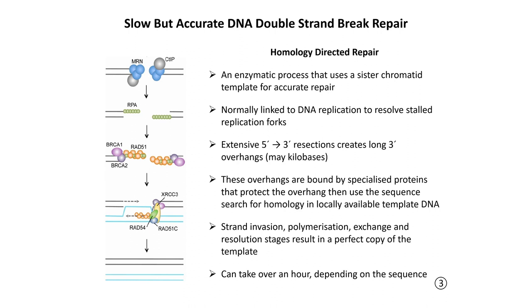This process overall can take over an hour depending on the sequence, so it's quite slow and limited to a specific part of the cell cycle. But in genome editing, we can use this to persuade the cell to make a specific change for us. Instead of having a sister chromatid as the copy, we deliver a donor DNA — a plasmid or viral genome introduced into the cells in excess — so the exchange of the sequence we're interested in becomes the dominant event.